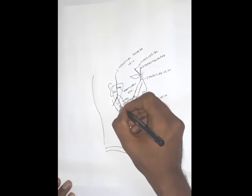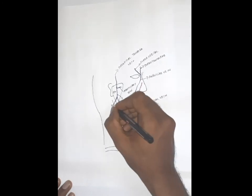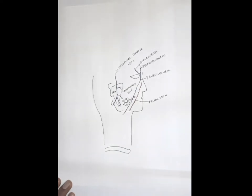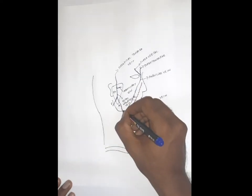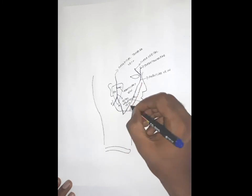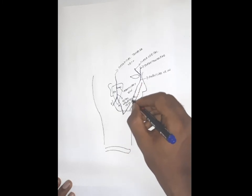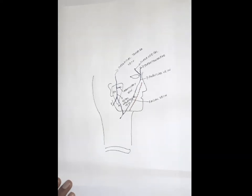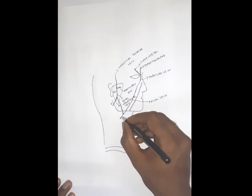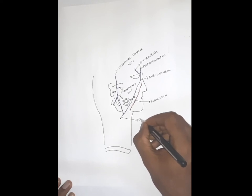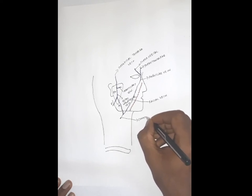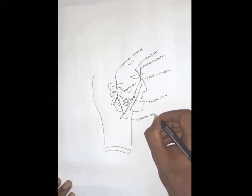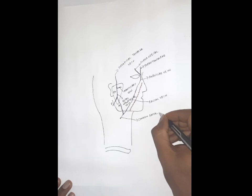The retromandibular vein divides into two divisions: the anterior division and the posterior division. The anterior division runs down and joins with the facial vein, which is already coming from above, to form another vein called the common facial vein.